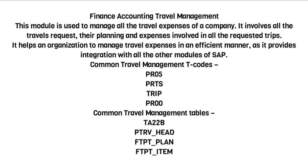Common Travel Management T-codes: PR05, PRTS, TRIP, PR000. Common Travel Management Tables: PTRV_HEAD, FTPT_PLAN, FTPT_ITEM.